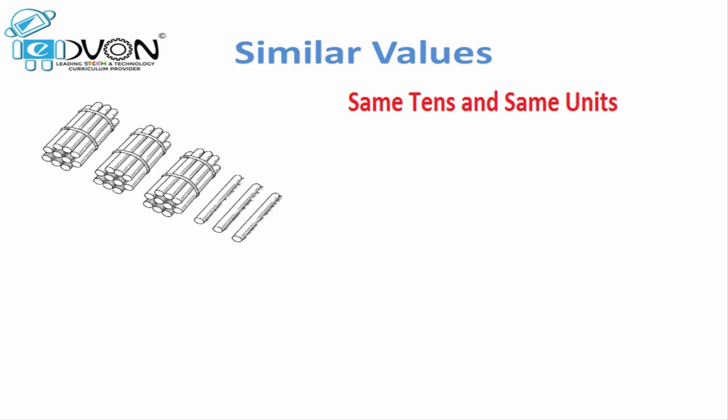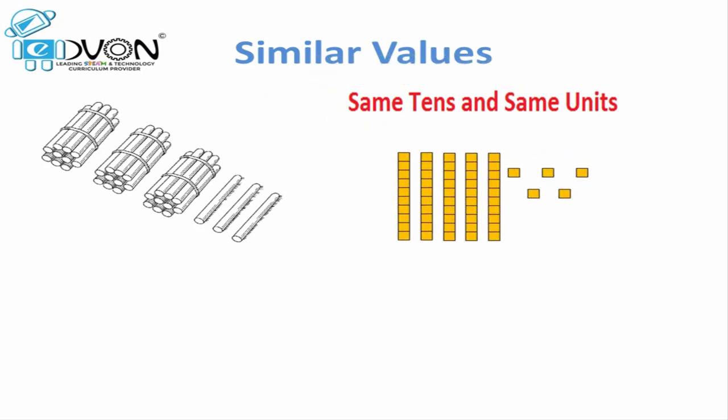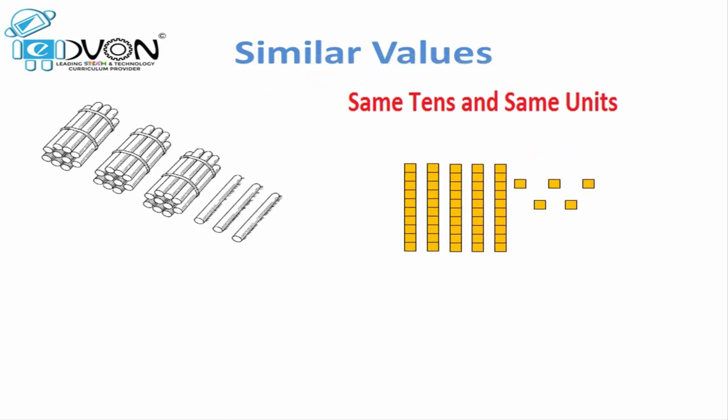Let's look at the next picture. What value does it have? How many tens are there? In this picture we have five tens of blocks and five single blocks as well. This means we have five tens and five units, which makes it 55. From these examples, we have a clear picture of what similar values are.